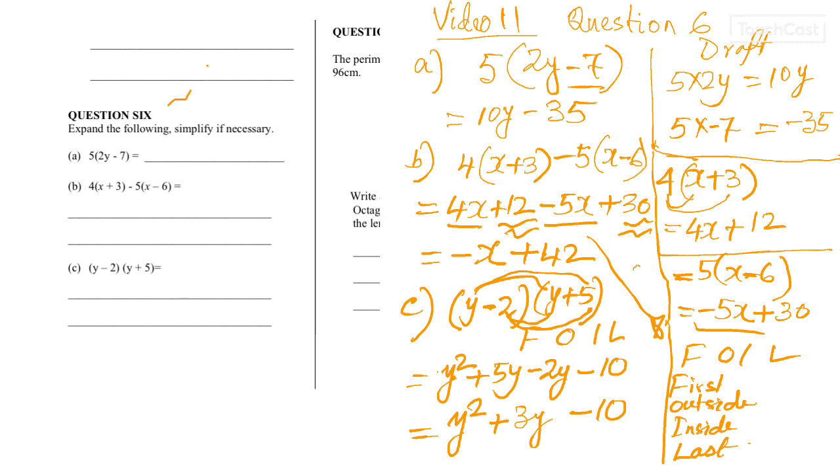Well, why not I show a different method, y minus 2. With the multiplication grid. Y plus 5. That will give you y squared. That will give you negative 2y. That will give you positive 5y. And that will give you negative 10. And now, if I put them together, that will give you 3y. So, eventually, we end up with the same answer.